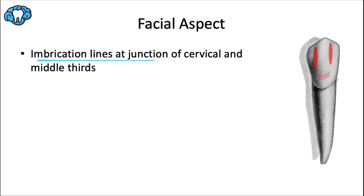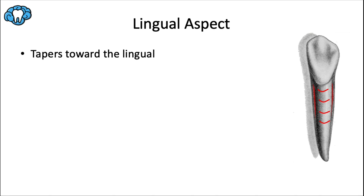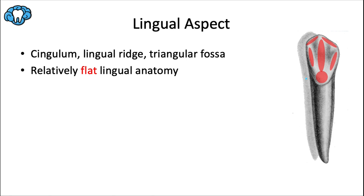From the lingual aspect, you can see a lot of the mesial and distal crown and root surfaces because there's a lot of taper toward the lingual. You can even see the linear developmental depressions or root flutes on the mesial and distal surfaces, which provide more surface area for a stronger periodontal ligament attachment. Unlike incisors which have a lingual fossa, just like the maxillary canine we see a lingual ridge that separates a mesial and distal triangular fossa — but despite all of this anatomy, it's relatively flat, which is another good way to distinguish it from the maxillary canine.